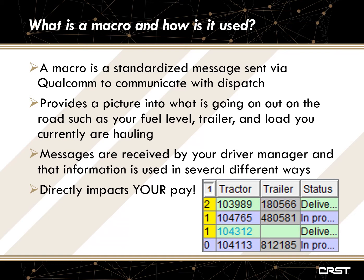And how does this impact you? It impacts your pay. The reason it impacts your pay will be explained in the next few slides, but what I'd first like to do is direct your attention to the picture on the bottom right-hand of your screen. This is what it looks like when we actually receive a message or Qualcomm macro from your truck. On that first column, where there's a 2, a 1, a 1, and a 0, those indicate the number of messages each truck has sent in. So as you can see, truck 103989 has actually sent us two Qualcomm messages and they have been unread, which is why they show that number there.